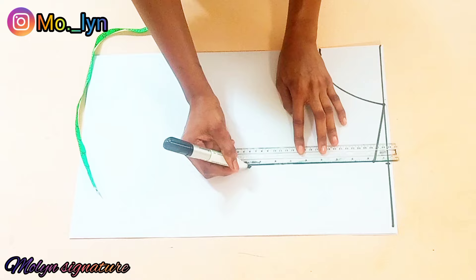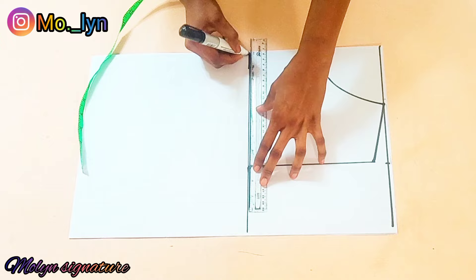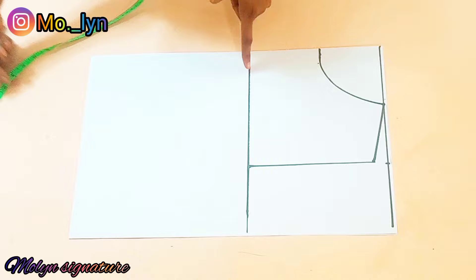Now I will be ruling a straight horizontal line that will serve as my chest line, and from there I'm just going to go down and mark other vertical measurements. I'll be labeling this as my chest line or my bust line.